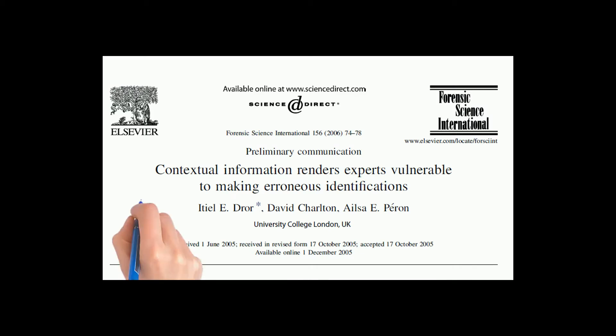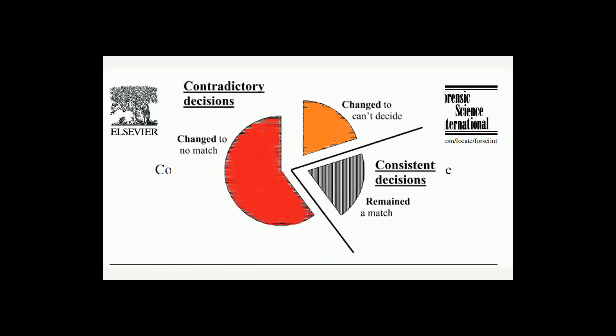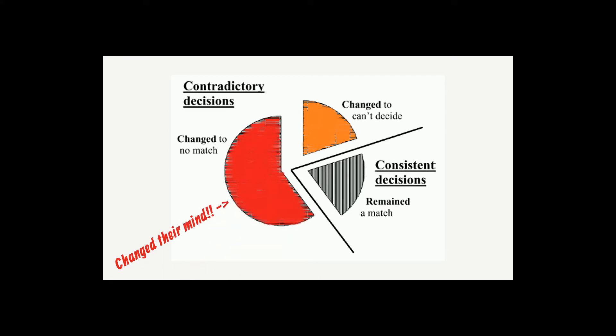It has been found that cognitive bias and context can influence the result of fingerprint analysis. Researchers from University College London gave a crime scene print and a suspect print to five analysts, who all correctly identified the prints as a match. But five years later, they sneakily gave them the same pair of fingerprints, this time telling them these were the prints from the Madrid bombings bag and the FBI's matched print — setting up the false expectation that they would not match. Only one forensic scientist still said the prints were a match; three changed their mind and said they weren't; and one said they could not decide.